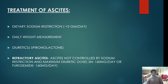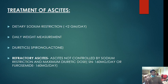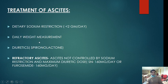Treatment of ascites: first, dietary sodium restriction to less than 2 grams per day and daily weight monitoring. Give diuretics — the most commonly used is spironolactone. Why spironolactone? Because in cirrhosis there is hyperaldosteronism, causing increased sodium absorption and increased potassium excretion leading to hypokalemia. Spironolactone is a potassium-sparing diuretic, and so it is the preferred drug of choice. Maximum dose is 400 mg per day.